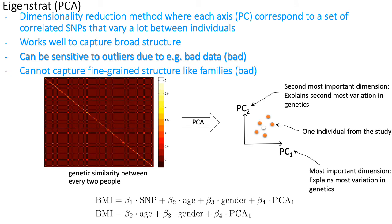PCA is formally a dimensionality reduction method. In the current context, we'll use it for visualizing data and for estimating covariance to correct for things like ethnicity. The idea is that your data starts out high dimensional — genotyping assays nowadays can assay up to 10 million SNPs per individual, so each individual is described by a set of 10 million different SNPs.